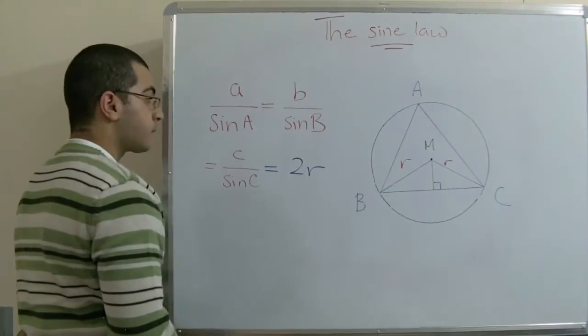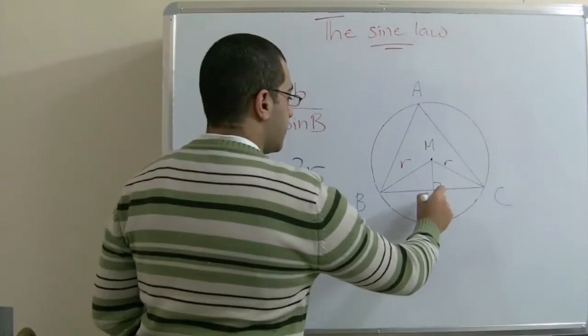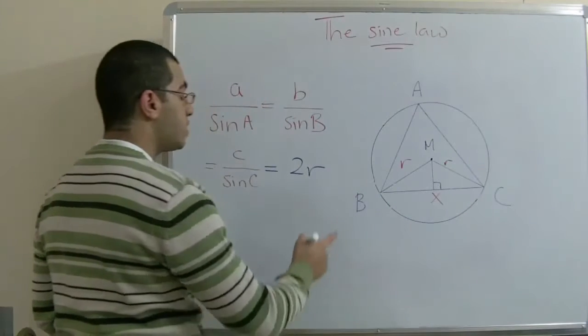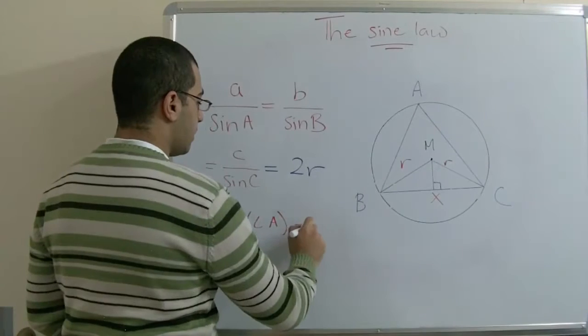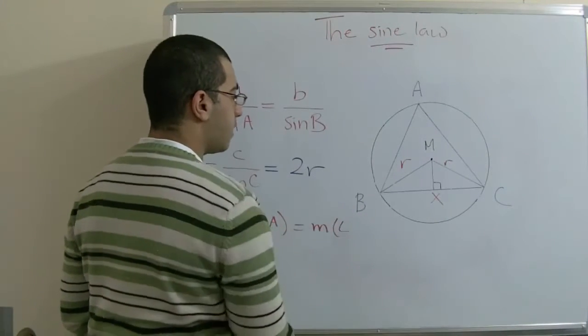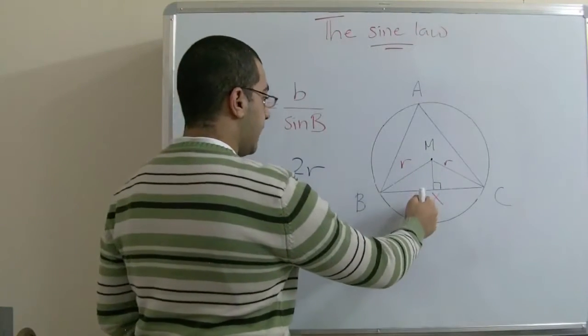So if this point is X, the measure of angle A equals the measure of angle BMX.